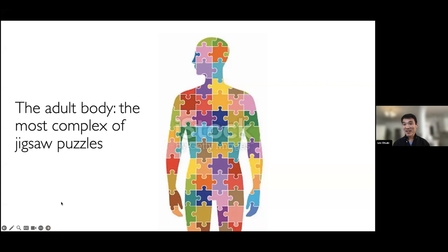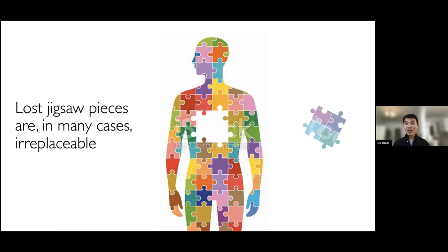As developmental biologists, you all know that the adult body is one of the most complex jigsaw puzzles that we can find in nature. We all derive from one single fertilized egg cell that then differentiates to give rise to all of these different cell types that make us who we are today. Unfortunately, if we lose any parts of our jigsaw puzzle during adult life — for example, due to injury or disease — in many cases these jigsaw pieces can no longer be replaced, because we're notoriously poor at regenerating.